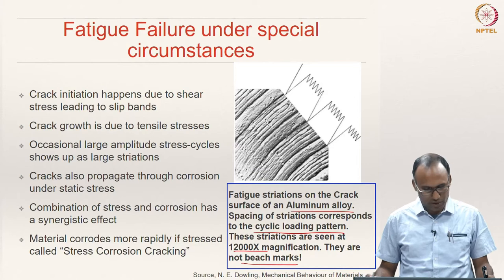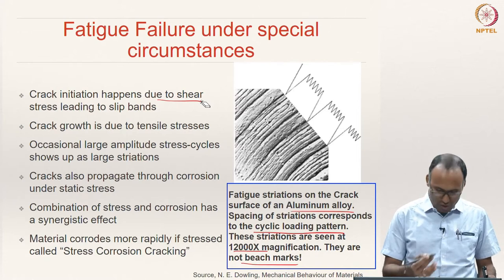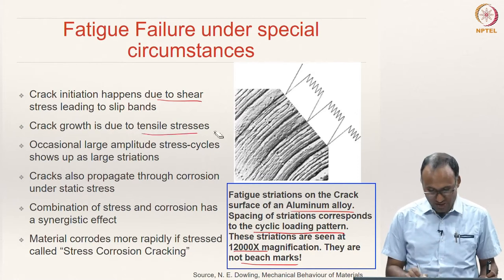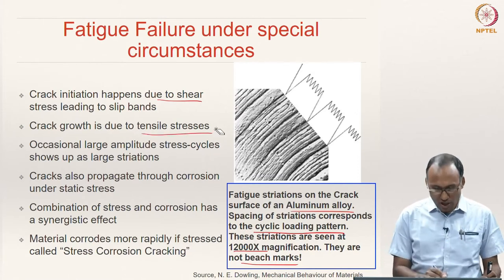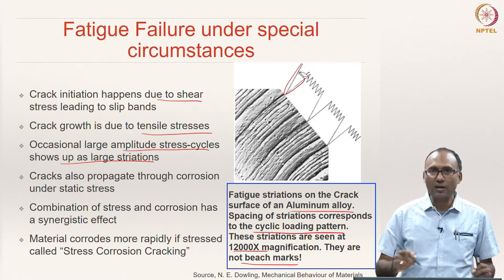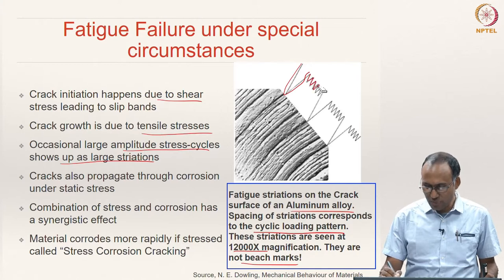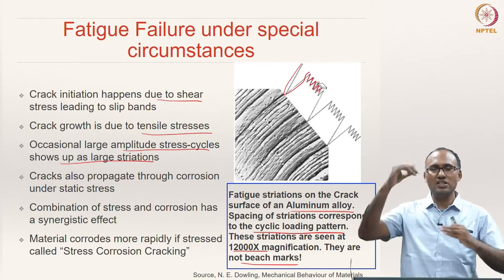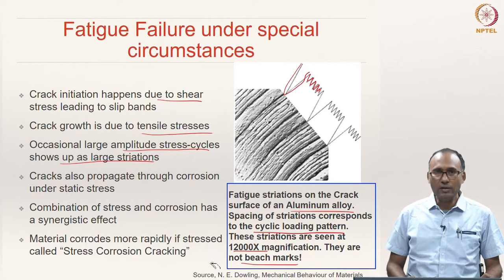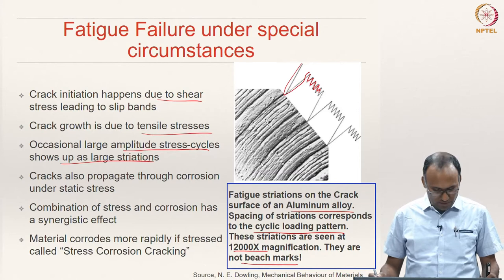The striations give you the signature of the kind of loading on the system. Crack initiation happens due to shear stress, which leads to slip bands, and crack growth happens due to tensile stress. The occasional large amplitude stress cycle shows up as large striations, while small striations correspond to oscillation around a baseline stress amplitude — occasional stress jumps appear as signatures of large striations.